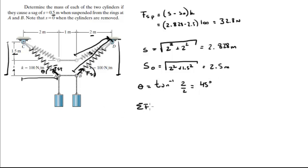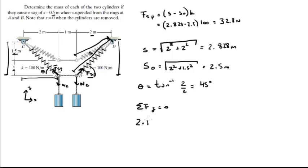The sum of the forces in the Y direction is equal to 0. The weight of the cylinder acts downward, and the two spring forces act upward at 45 degrees. So, assuming positive Y is upward, we have 2 times the force of the spring times the sine of 45, which gives the Y component of the spring forces.